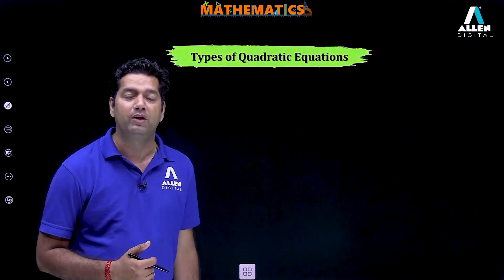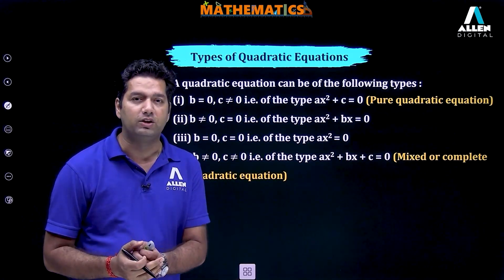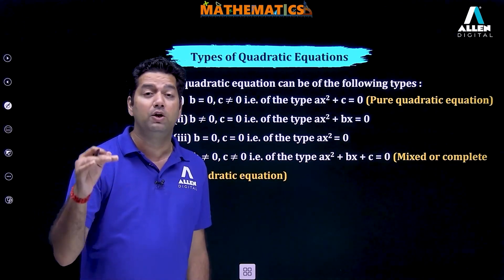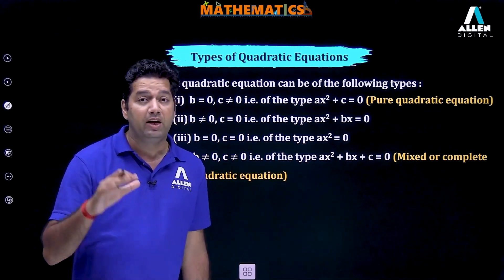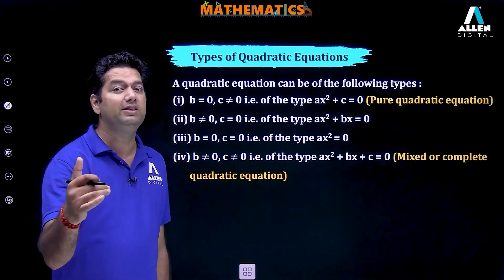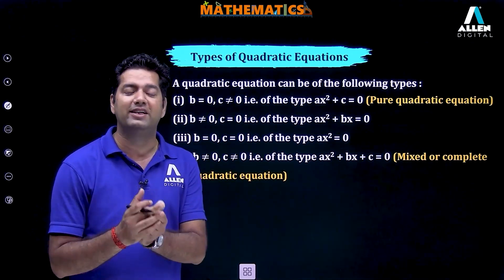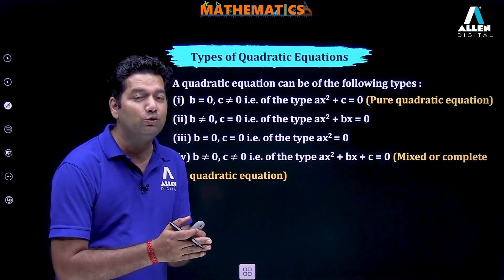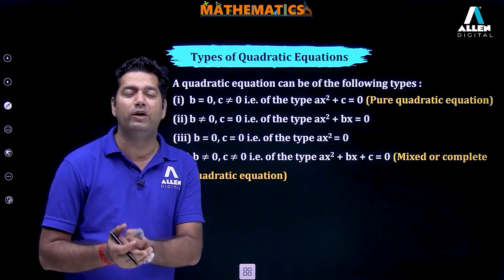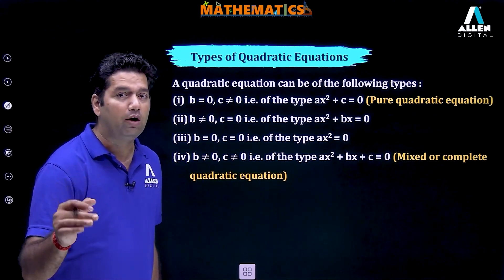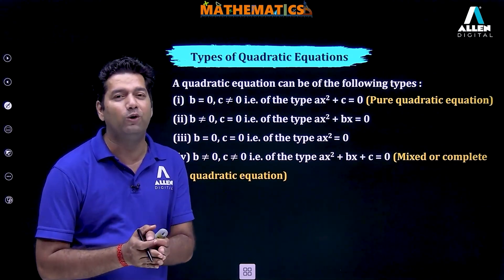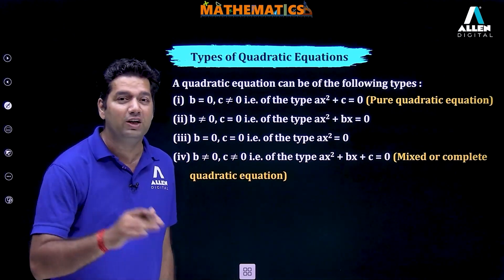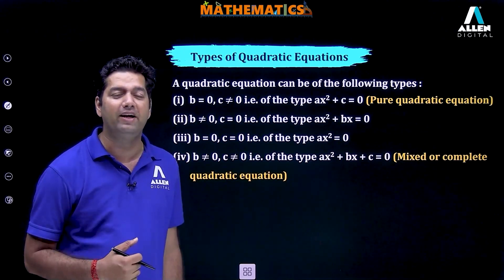Types of quadratic equations: if b is equal to 0, we get ax square plus c equal to 0 — this is known as a pure quadratic equation. If b is not equal to 0 but c is equal to 0, we get ax square plus bx equal to 0. If both b and c are equal to 0, we obtain ax square equal to 0. If both b and c are not equal to 0, the equation is ax square plus bx plus c equal to 0 — this is known as the mixed or complete quadratic equation.